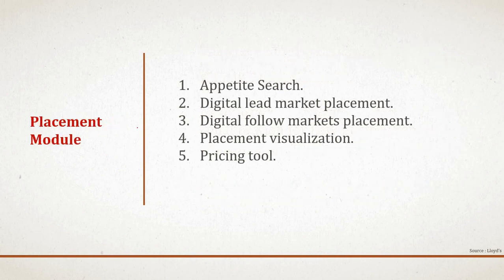Within the placement module we have several sub-modules: appetite search, digital lead market placement, digital follow market placement, placement visualization, and a pricing tool. Appetite search is a tool that gives the broker an up-to-date view of which syndicates have the risk appetite to accept the risk they are looking to place, and suggests which syndicate has the expertise to accept it.